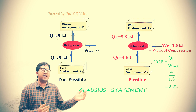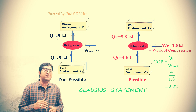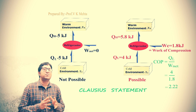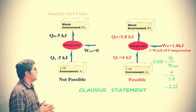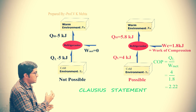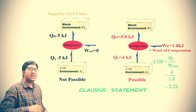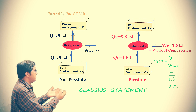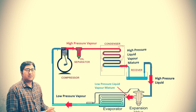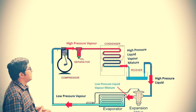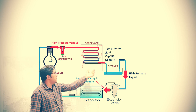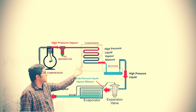Energy always flows from high grade to low grade. But according to the second law of thermodynamics, if you want to transfer heat from a lower temperature body to a higher temperature body, you need to do some work in the compressor. Basically, in a refrigerator there are five components: receiver, compressor, condenser, expansion valve, and evaporator.